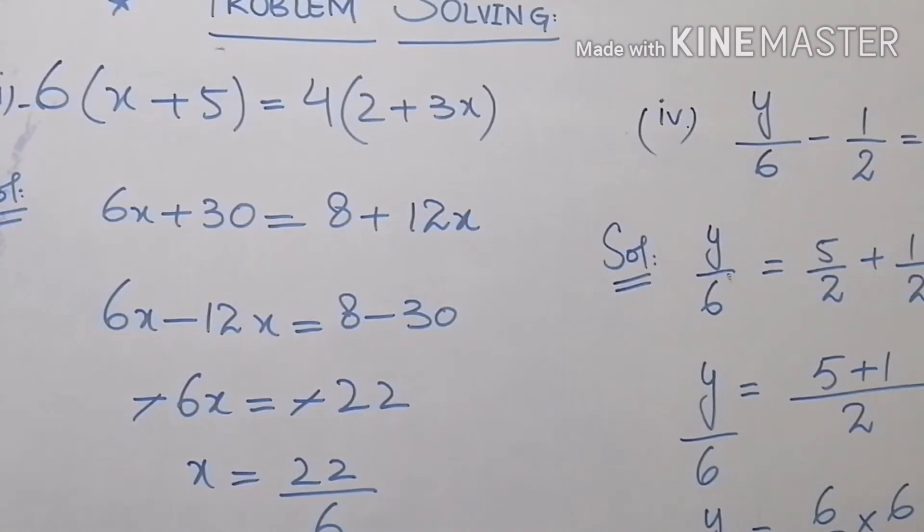Here we are going to solve another example of linear equation which is 6 into x plus 5 equals to 4 into 2 plus 3x. As you can see, here are the brackets and you first have to solve the brackets. So in the solution, I am going to multiply 6 with the values in the bracket. So here it will come 6x plus 6 fives are 30. And on the other right hand side, we are solving the brackets.